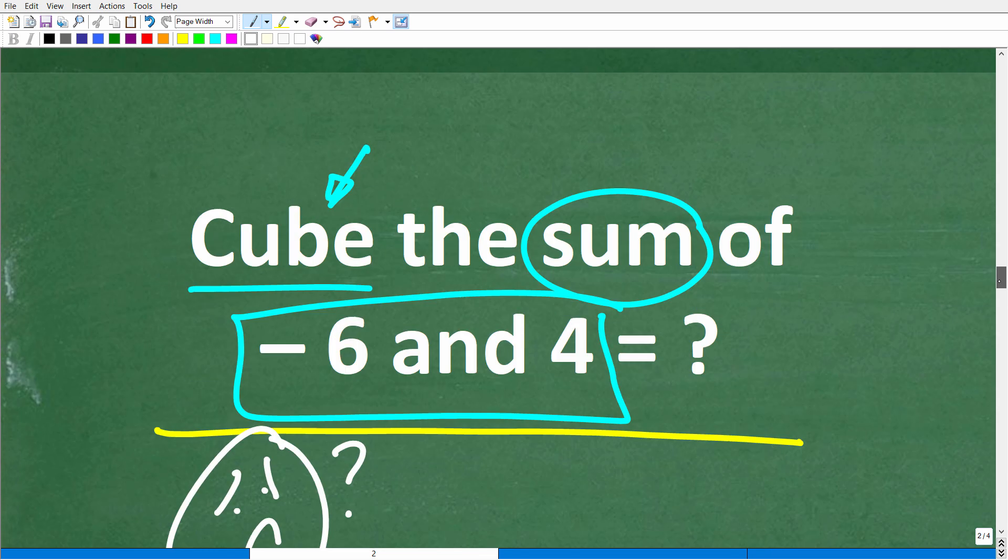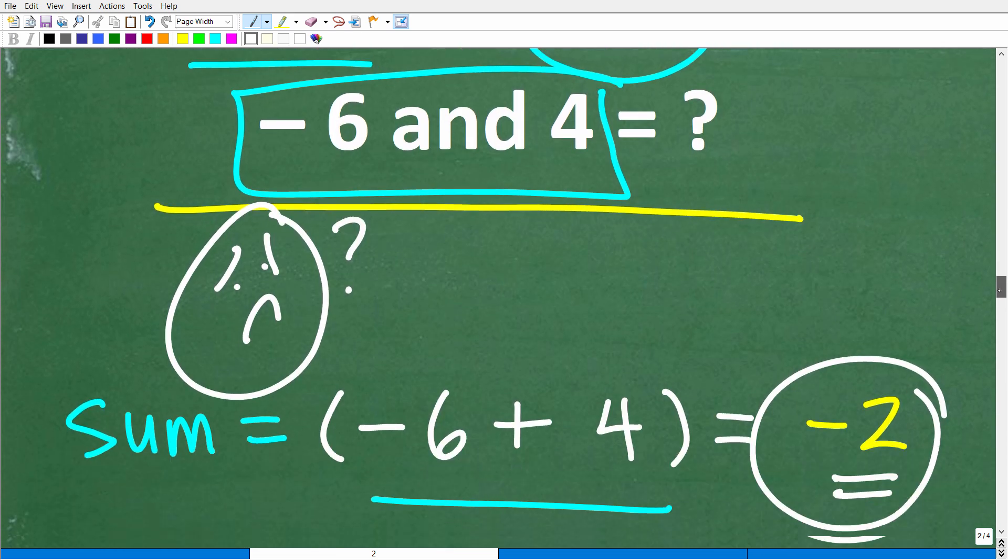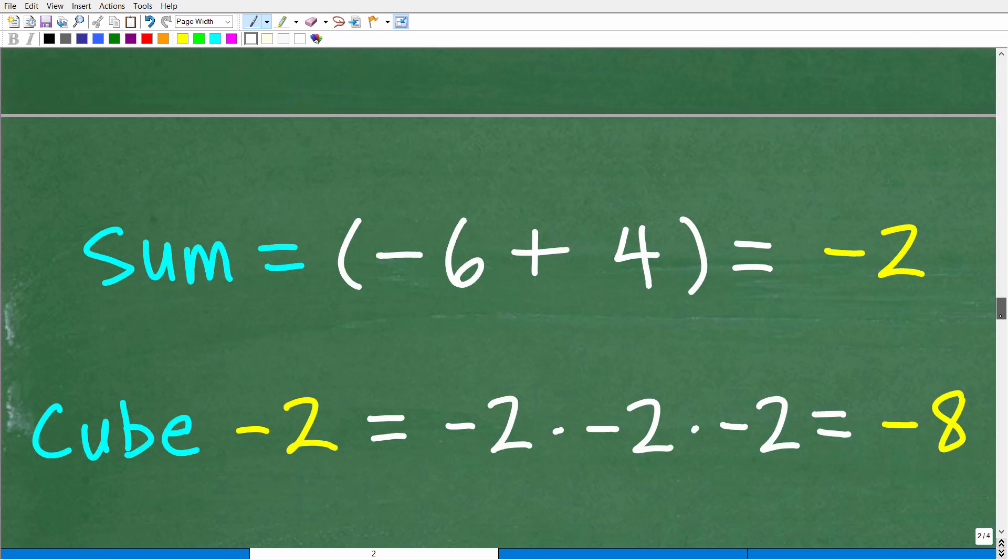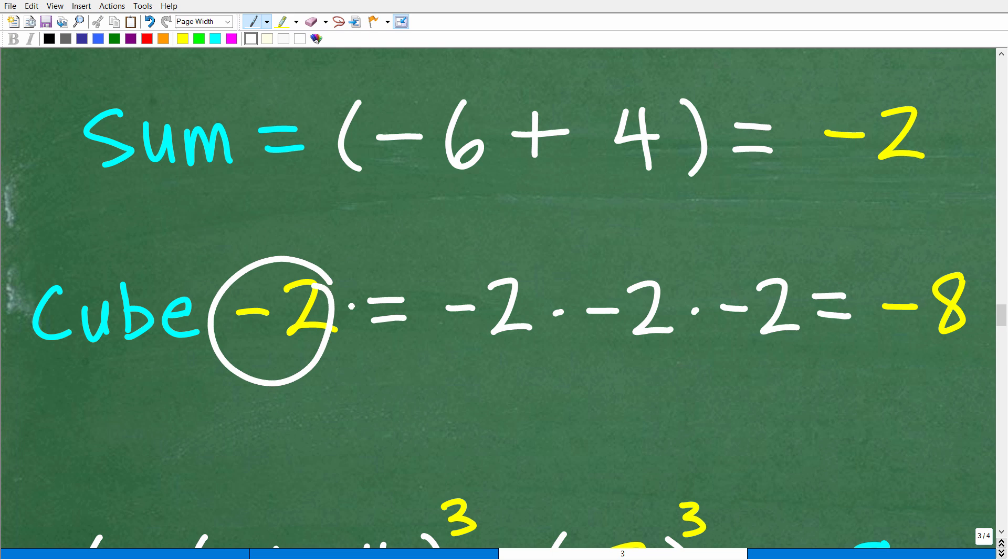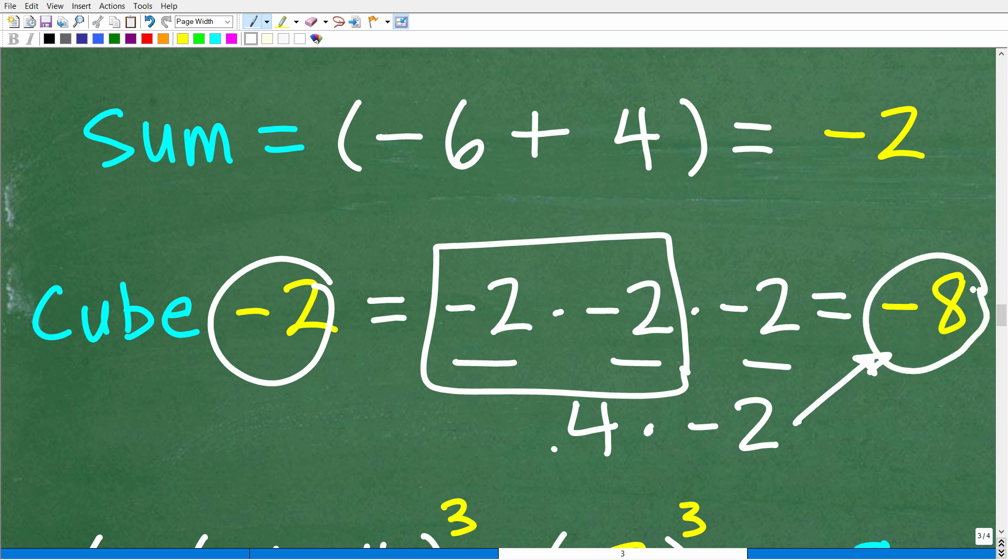Now, what we need to do next is to cube that answer. So we need to cube negative 2. Alright, so cube negative 2 means what? Well, it means take this negative 2 and multiply it by itself three times. So a negative times a negative is a positive. So negative 2 times negative 2 is a positive 4 times a negative 2. A positive times a negative is a negative. So the final answer here is negative 8.